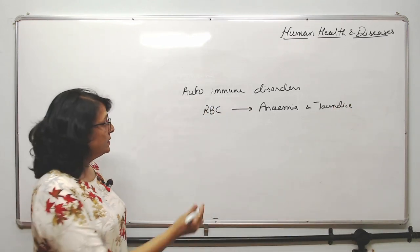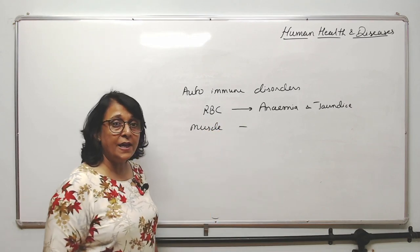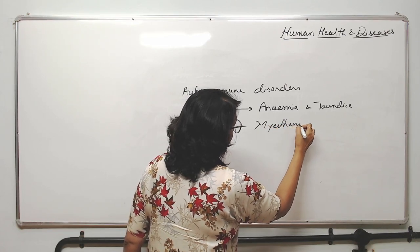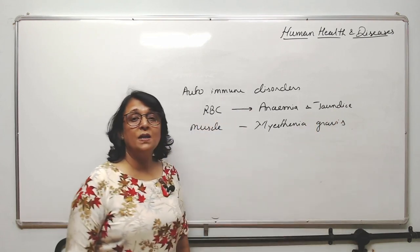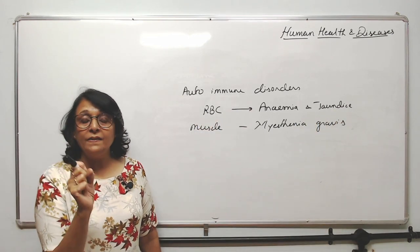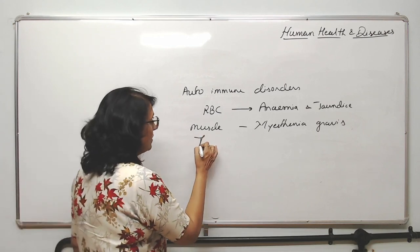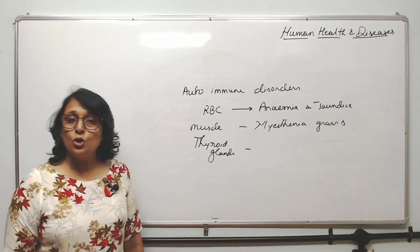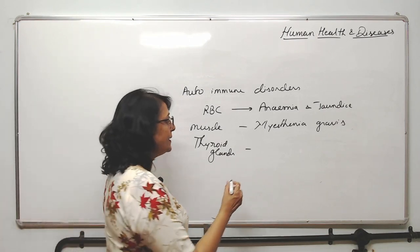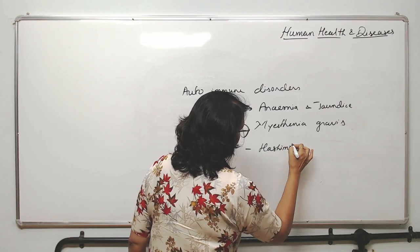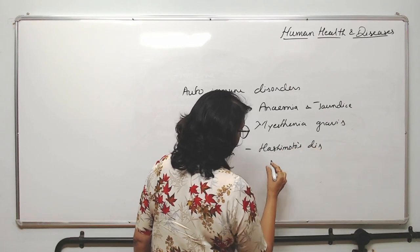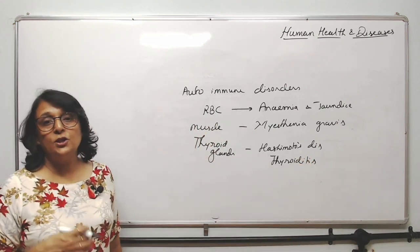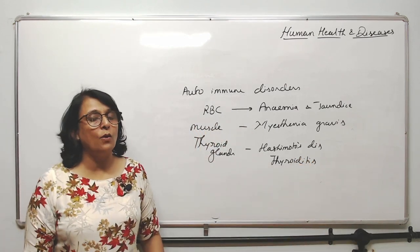If our muscles become antigenic, then the condition is myasthenia gravis — our muscles are going to become thin and shrink because they are being attacked. Suppose the thyroid gland cells become antigenic — the immune system is going to attack them. That condition is known as Hashimoto's disease, also known as thyroiditis. There is inflammation, then swelling, and ultimately the thyroid will be damaged.